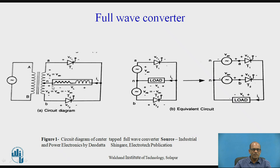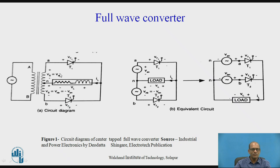Circuit Operation: when Φ_AN is positive, SCR T1 is forward biased and T2 is reverse biased. Because this is a Centre-Tap secondary, Φ_AN and Φ_BN are 180 degrees out of phase — that is the speciality of the Centre-Tap Transformer. Therefore, in the positive half-cycle of input, SCR T1 can conduct and SCR T2 is reverse biased. Similarly, in the negative half-cycle of input, Φ_AN is negative, therefore SCR T1 will be reverse biased and T2 will be forward biased, which can conduct if a firing pulse is applied.